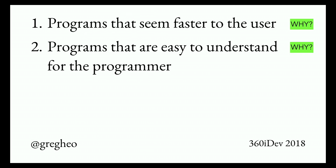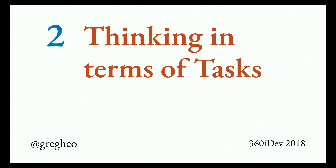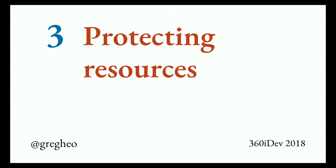The next important question is how. I have three things I want to talk about throughout the talk. The first is structuring our programs better — programming is all about bringing structure to our ideas, and concurrency is about structure as well: small bits of code with well-defined order and a well-defined set of dependencies. The second is thinking in terms of tasks — how can we manage different threads of execution, avoid complexity overhead, and give programs the best opportunity to take advantage of multi-core hardware? And third is a mechanism for managing and protecting resources.